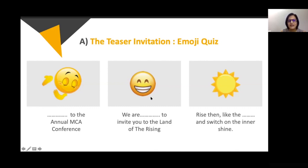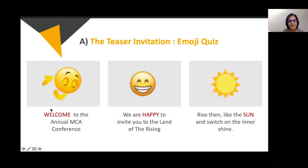The second teaser was: 'We are [blank] to invite you to the land of the rising [blank].' The answer: 'We are happy to invite you to the land of the rising sun. Rise then like the sun and switch on the inner shine.' So the full message became: 'Welcome to the annual MCA conference. We are happy to invite you — rise like the sun and switch on the inner shine.' The theme came out right from the teaser design.